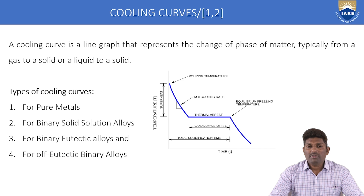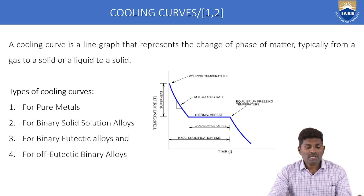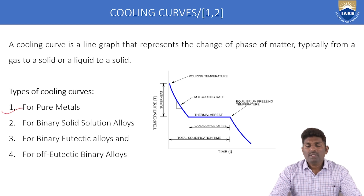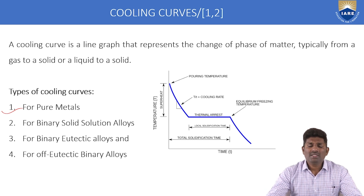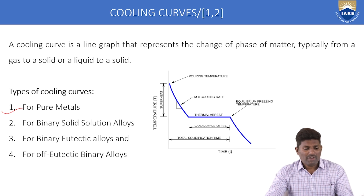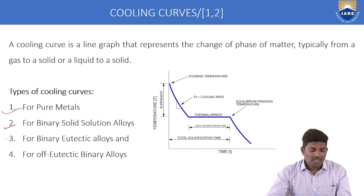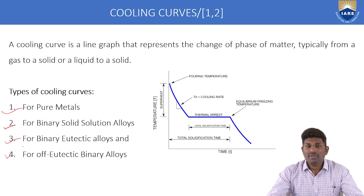We can draw a graph which represents the change of phase of any type of material of different compositions. We have four different types of cooling curves available. The first one is the cooling curve for pure metals. These cooling curves will change depending upon the type of alloy. We also have binary solid alloys, binary eutectic alloys, and off-eutectic binary alloys.